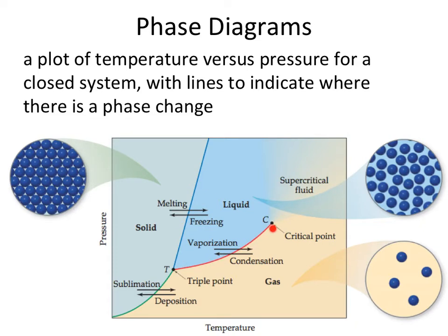The first thing we have here is our vapor pressure curve. This red curve shows us the equilibrium occurring between the liquid and gas phase. The green curve here represents the sublimation curve, basically separating your solid and your gas phase.